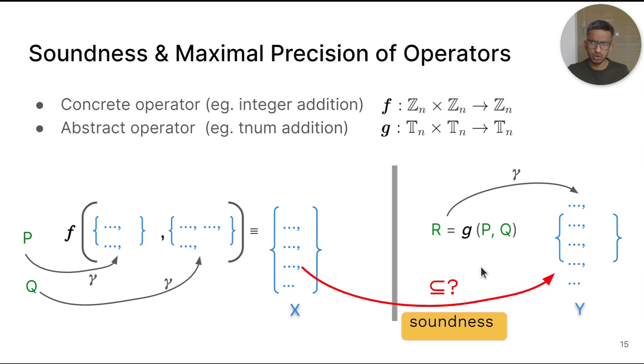Now we can also talk about maximal precision of an abstract operator. Let's take the concrete set X and apply the abstraction function alpha to it to obtain the TNUM S. The TNUM operator G is maximally precise if the result R it produced is exactly the same as S. Note that the TNUM result R need not always be exactly the same as S. To be sound, it just needs to over-approximate the set abstracted by S.